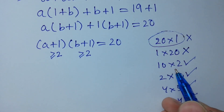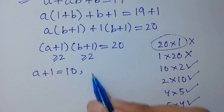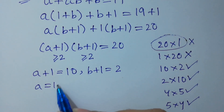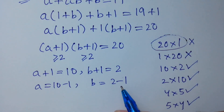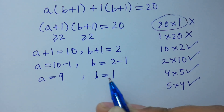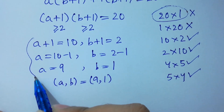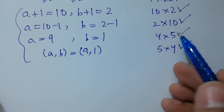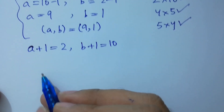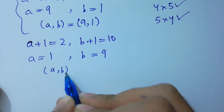For the case 10 times 2: a plus 1 equals 10 and b plus 1 equals 2, giving a equals 9 and b equals 1. For the case 2 times 10: a plus 1 equals 2 and b plus 1 equals 10, giving a equals 1 and b equals 9.